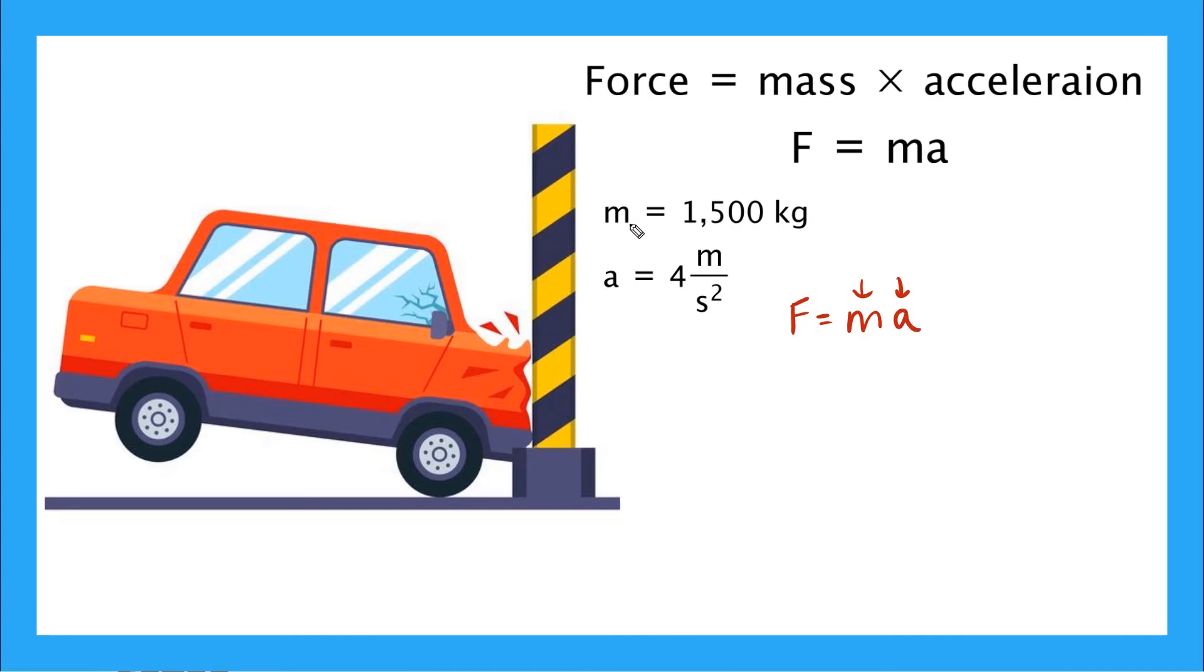But in this case, we know we have those given values for M and A. So we can use substitution. So let's plug it in. We know that the mass is equal to 1500 kilograms, and the acceleration is 4 meters per second squared. Now it's okay if you don't totally understand how these units work yet, that'll come later.